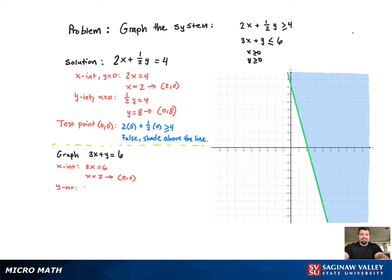Now for the y intercept. Plug in 0 for x, which just gives us y equal to 6, which is the point (0, 6). Now we can graph.